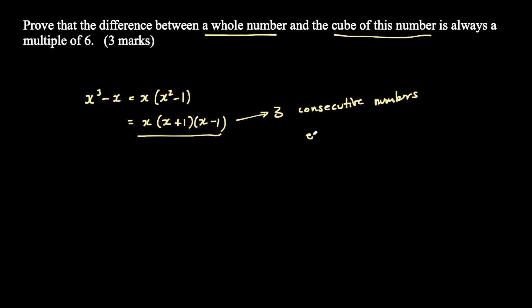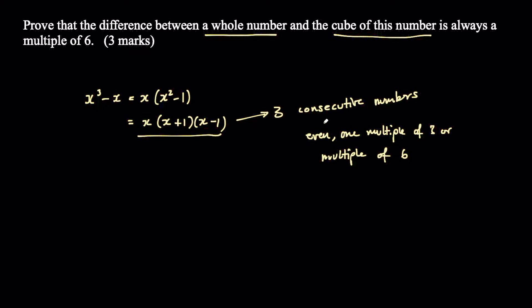There's something you should know about three consecutive numbers. Firstly, one of them is always going to be even — you cannot possibly have three consecutive numbers without an even number. And one is also always going to be either a multiple of three or a multiple of six. So let's write some numbers to be really clear about what I'm talking about.